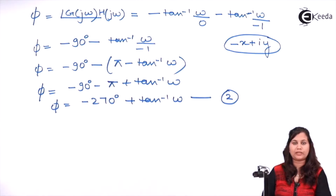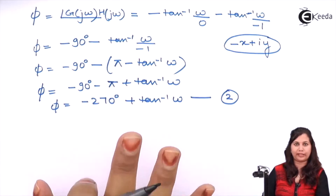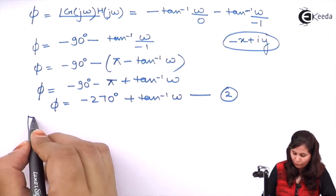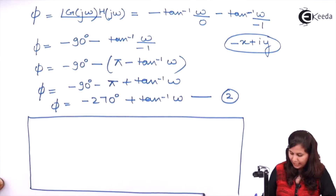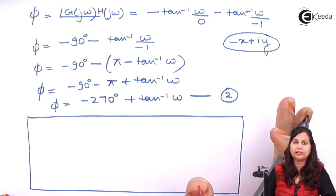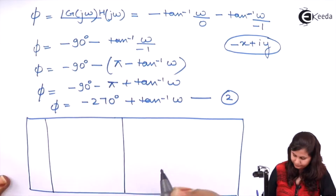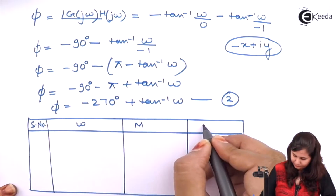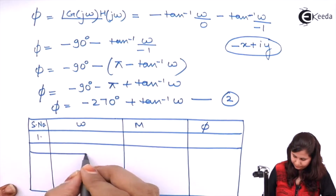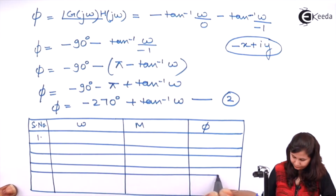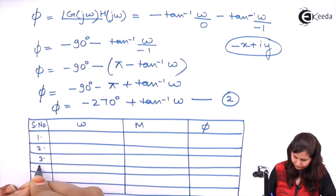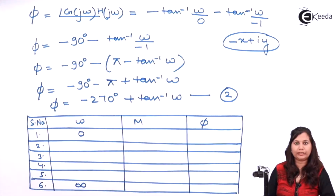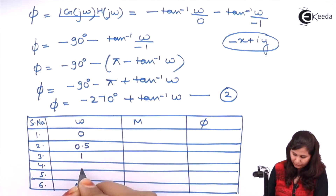Using equation 1 for magnitude and equation 2 for phase angle, we are going to form a table and then plot the polar plot. In this table we will vary the value of ω from 0 to infinity, taking values 0, 0.5, 1, 2, and 5.